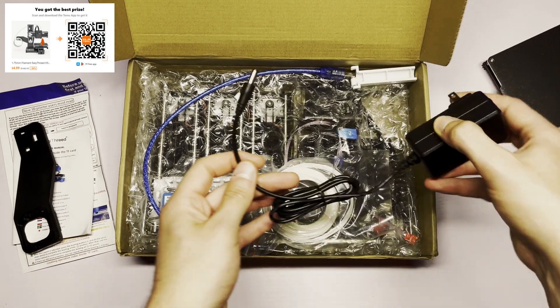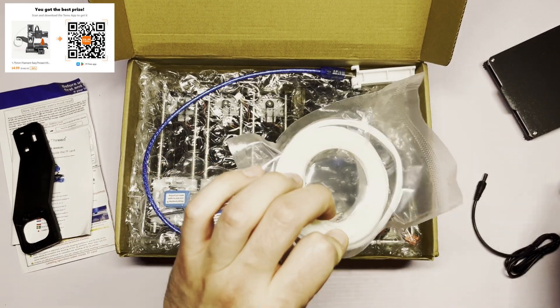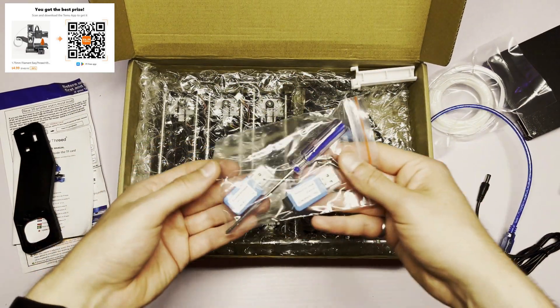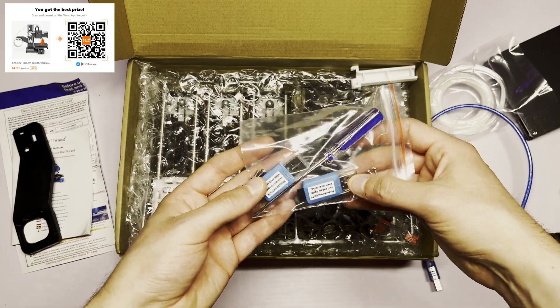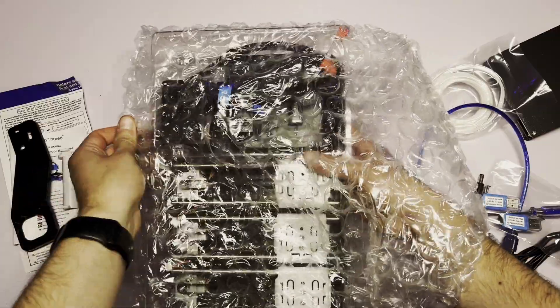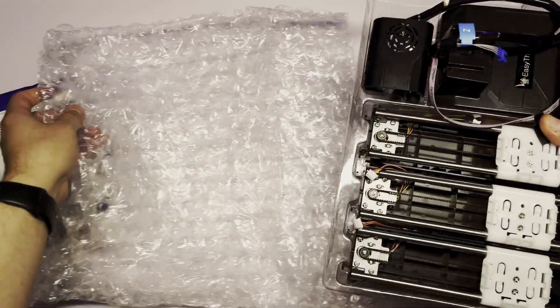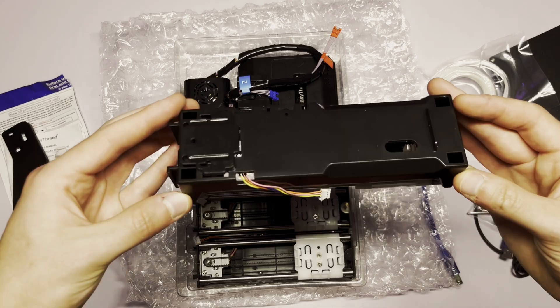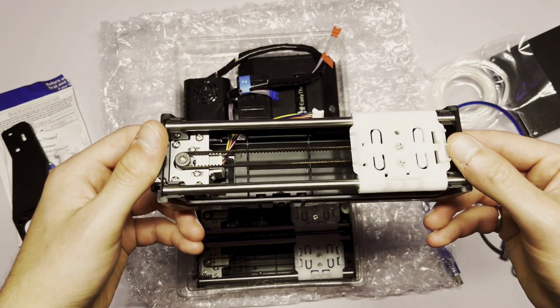We've got a power supply, some testing filament, a USB B cord, and a bag of screws with a screwdriver and USB drives. The bulk of the printer looks to be wrapped in this bubble wrap. So let's take that out. We've got the X, Y, and Z axis. And this stuff feels to be pretty cheap.